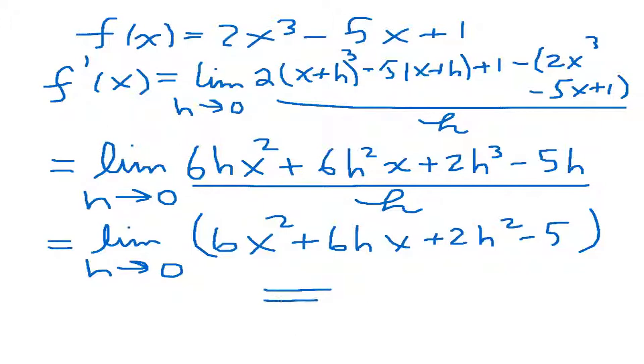And now if I simply divide through by h, I get the limit as h goes to 0 of 6x² + 6hx + 2h² - 5. And as h goes to 0, this is equal to 6x² - 5.